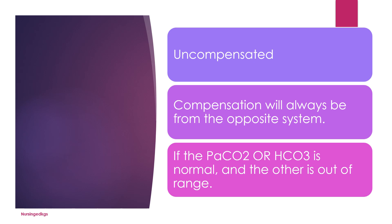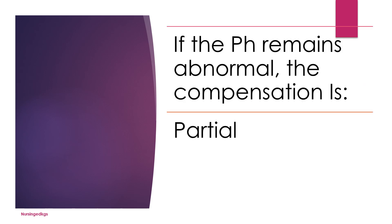Uncompensated acid-base disorders occur when the body's compensatory mechanisms are unable to bring the pH back into the normal range — the primary disorder is not fully offset and the pH remains outside normal. Compensation will always come from the opposite system: if the respiratory system is the main cause, compensation will come from the metabolic system. Partial compensation occurs when the compensatory mechanisms attempt to counteract the primary acid-base disorder but the pH does not fully return to normal — the compensatory response is evident but the original problem persists to an extent.